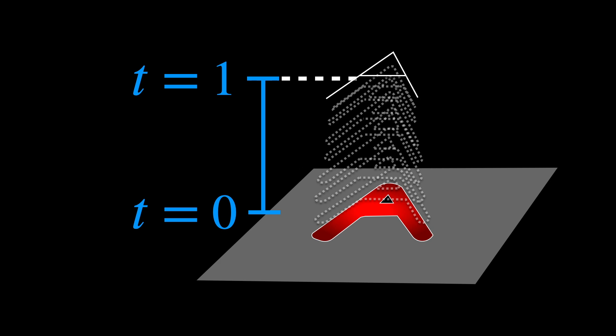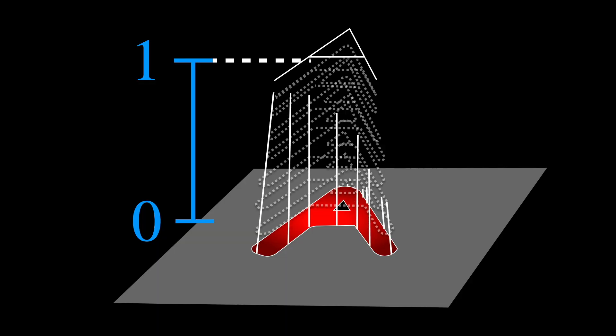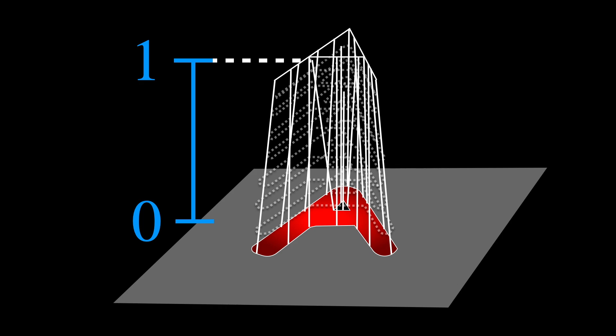This continuity ensures there are no sudden jumps or abrupt changes in the position of any point as time progresses from t equals 0 to t equals 1. Each point's movement is smooth, maintaining the geometrical integrity of the letter throughout the entire transformation. Each point moves along a straight line at a constant speed towards its final destination, so the transformation is orderly and predictable.